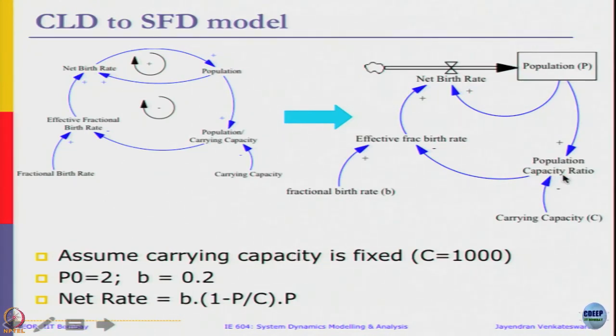This population capacity ratio, as the name defines, is nothing but population P divided by C. We can write that equation. Now let's see how the net birth rate is defined. This net rate is defined as b times 1 minus P by C times P. Since capital P is directly linked here, this effective birth rate, small b times 1 minus P by C, represents the effective fractional birth rate.